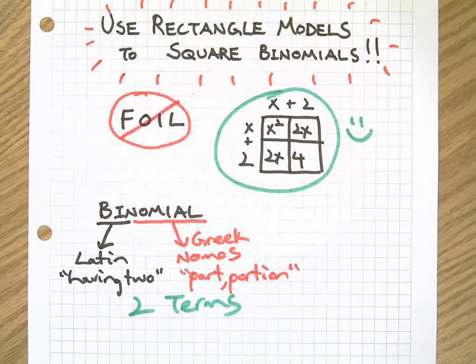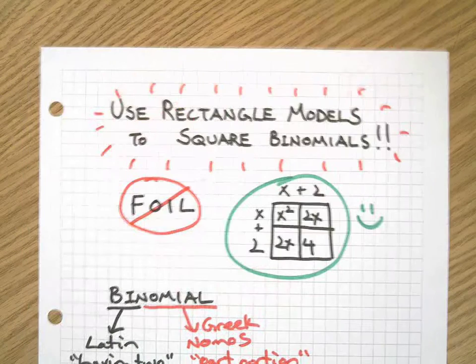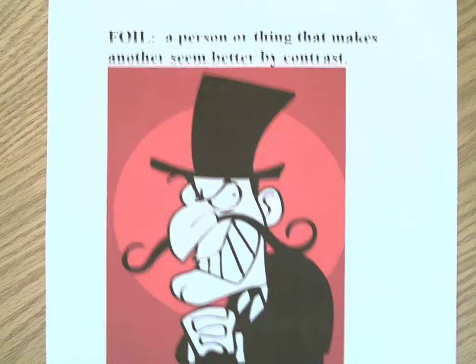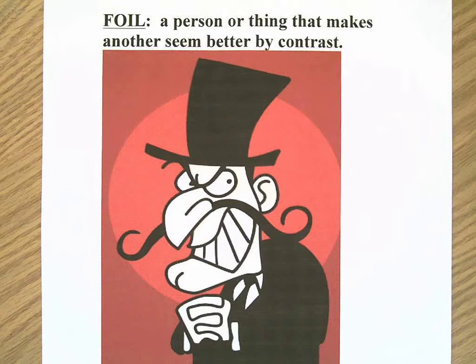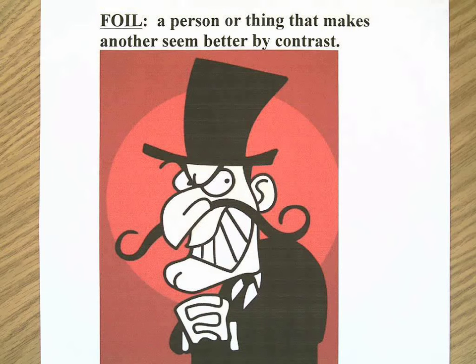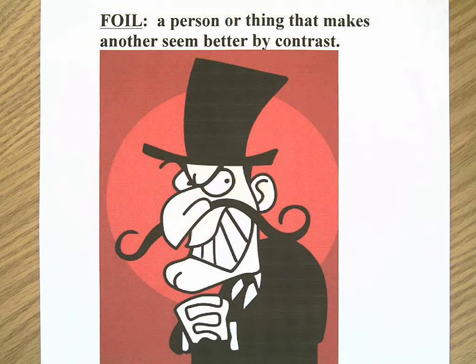And now let's talk about FOIL. First of all, foil has lots of different meanings, as you can see by our friend Snidely Whiplash here. Foil can be a person or thing that makes another seem better by contrast. Look at how mean he is! Most people look better in contrast to Snidely Whiplash, therefore he is a foil.